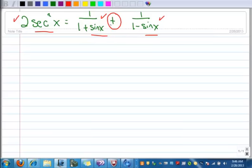To add them together, I need a common denominator. And I notice that when I look at these denominators, they are already conjugates of each other.